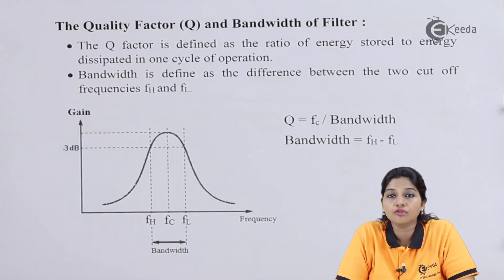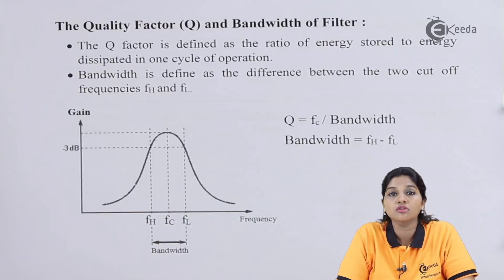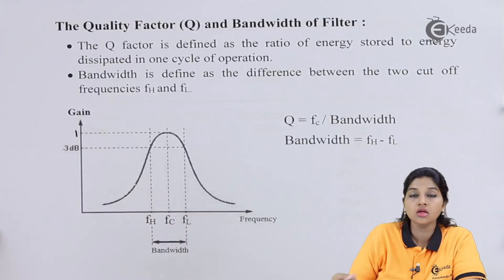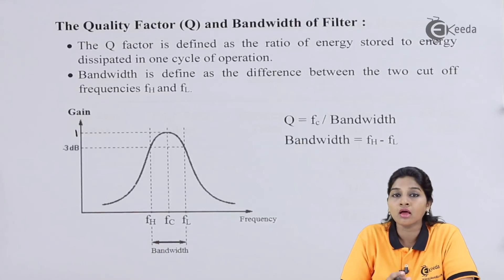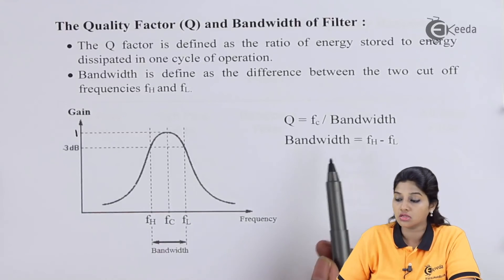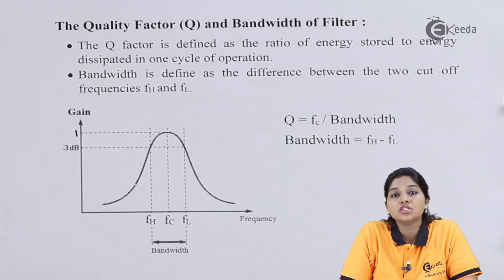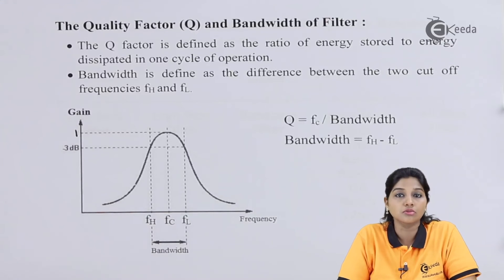A higher Q factor means a lower bandwidth. If bandwidth increases, the quality factor decreases. Bandwidth is calculated as FH minus FL, taken at the 3 dB down points from maximum gain. Bandwidth is expressed in Hertz since it is calculated on the frequency axis.